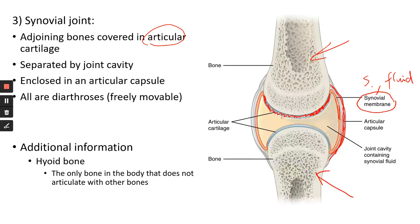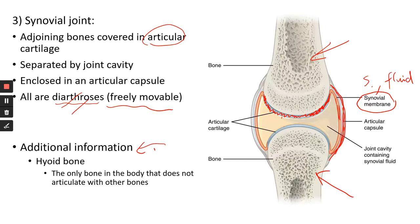All synovial joints are diarthroses — freely movable. You can move your wrist, elbows, and knees; they have a wide range of motion. As additional information: you have a hyoid bone, actually in your neck, and it is the only bone in the body that does not articulate with any other bones. It's hanging there, with tendons and muscles attached to it — the only bone that does not form a joint.